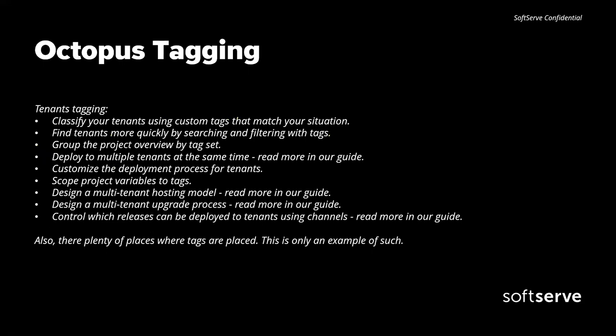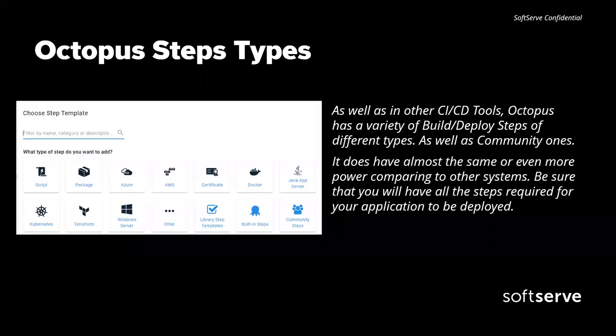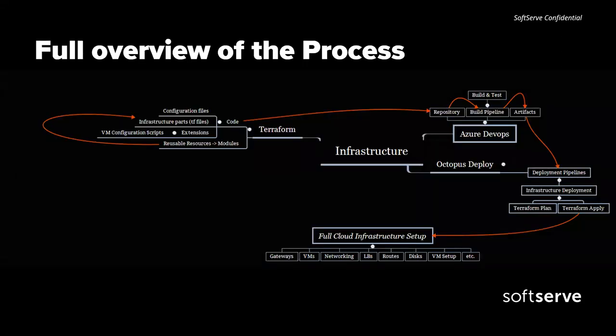Octopus Tagging provides a very good possibility for tagging any kind of resource underneath. You can find everything, filter everything, and categorize everything, no matter what complexity is required. This is a very cool feature for managing projects. For the steps — as I mentioned — you can find many types from inside Octopus, and also community steps where you can find a lot of external extensions developed by other people.